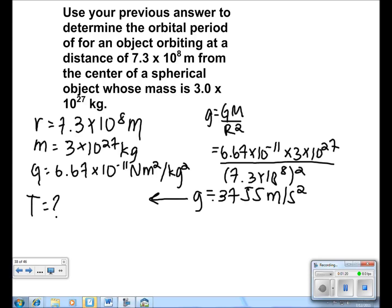To find the period, we use the formula T equals 2 pi times the square root of r over g. We plug in the numbers to get 2 pi times the square root of 7.3 times 10 to the 8th over 0.3755.